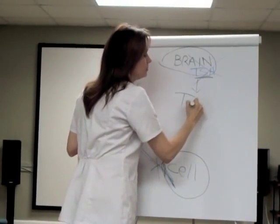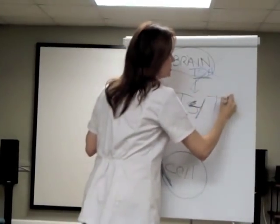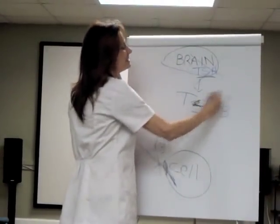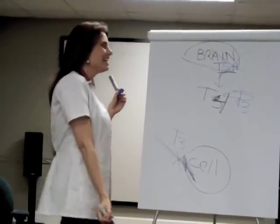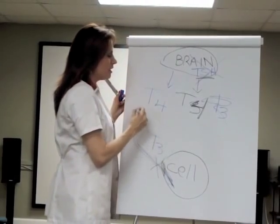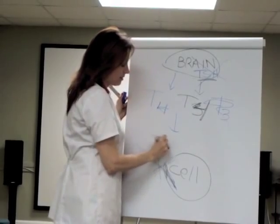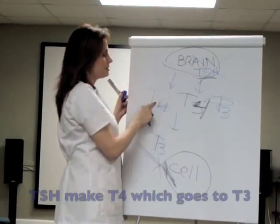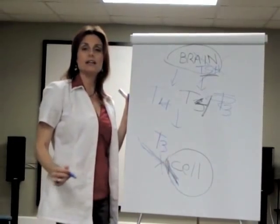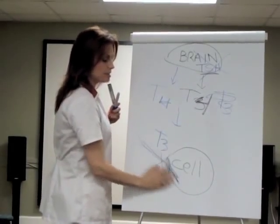TSH triggers the production of T4. One of the four iodine molecules gets knocked off and it creates T3. So TSH makes T4, T4 makes T3, T3 goes into the cell, and we get happy and lose weight. That's the important pathway.